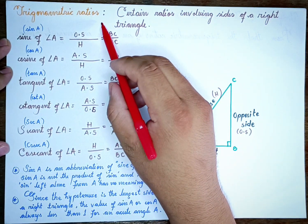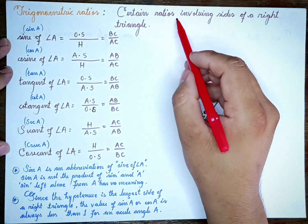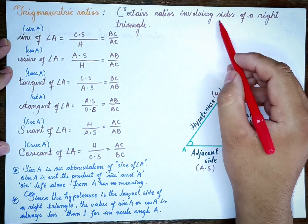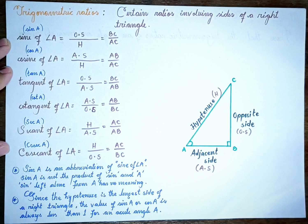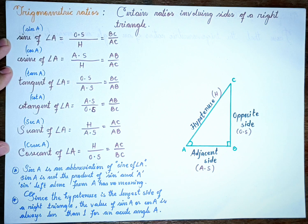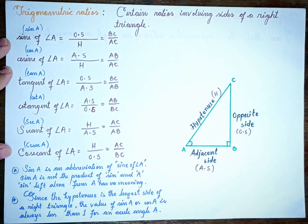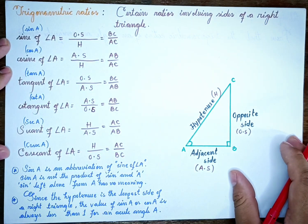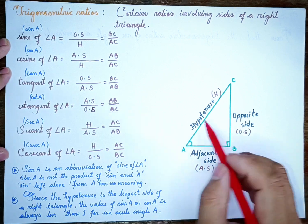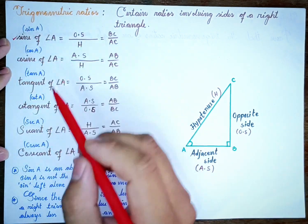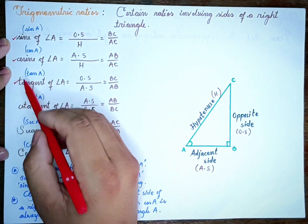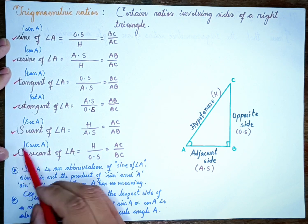Trigonometric ratios are certain ratios involving the sides of the right triangle. The six trigonometric ratios are: sine, cosine, tangent, cotangent, secant, and cosecant.